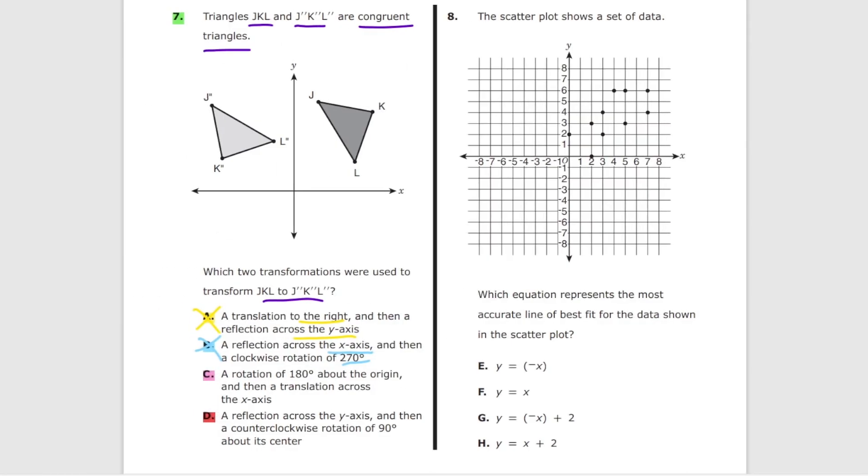Option C, a rotation of 180 degrees about the origin, so it goes like this, and then a translation, not reflection, translation across the x-axis. So it's either going this way or it's going that way. So C is clearly out and the right answer is D.